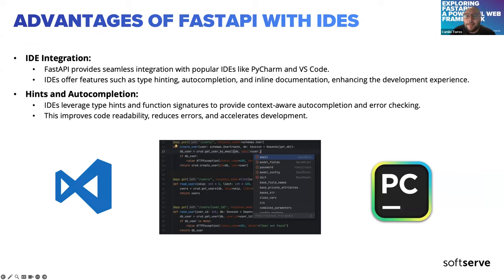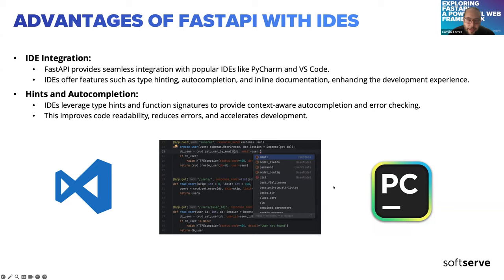Because of the type hints and Pydantic, we have a lot of advantages with IDEs. If you work with PyCharm or Visual Studio Code, you'll see that using FastAPI has many advantages — for example, autocomplete, error checking, and code completion — all thanks to the type hints and Pydantic libraries.